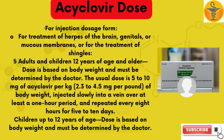For injection dosage form — for the treatment of herpes of the brain, genitals or mucous membranes, or for the treatment of shingles: adults and children 12 years of age and older, dose is based on body weight and must be determined by the doctor. The usual dose is 5 to 10 mg of acyclovir per kg (2.3 to 4.5 mg per pound) of body weight, injected slowly into a vein over at least a 1-hour period and repeated every 8 hours for 5 to 10 days. Children up to 12 years of age: dose is based on body weight and determined by the doctor.